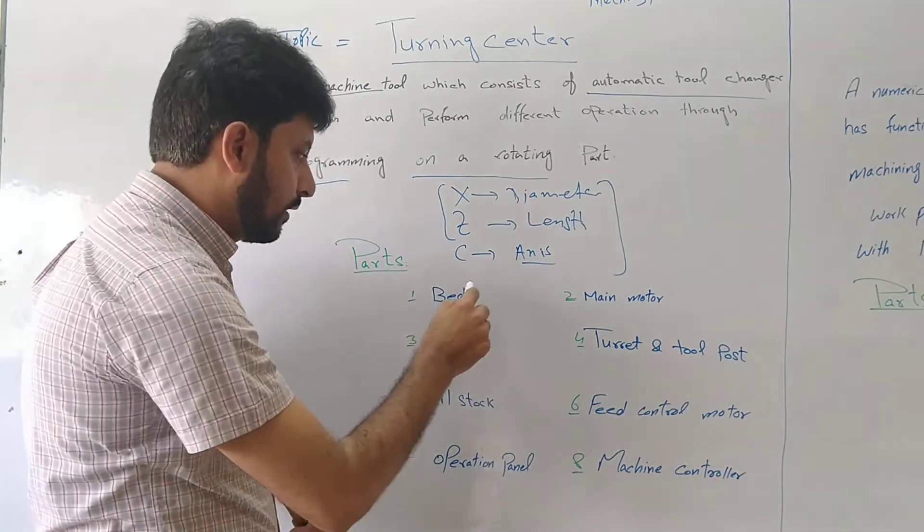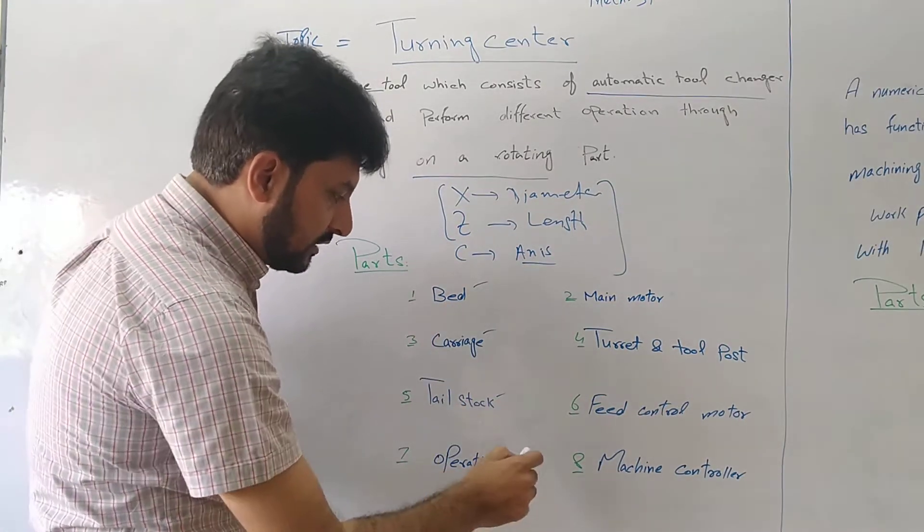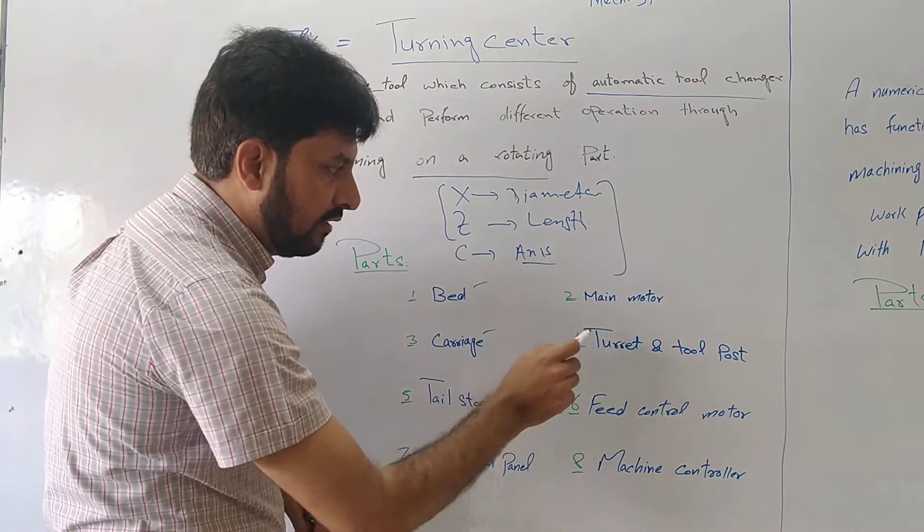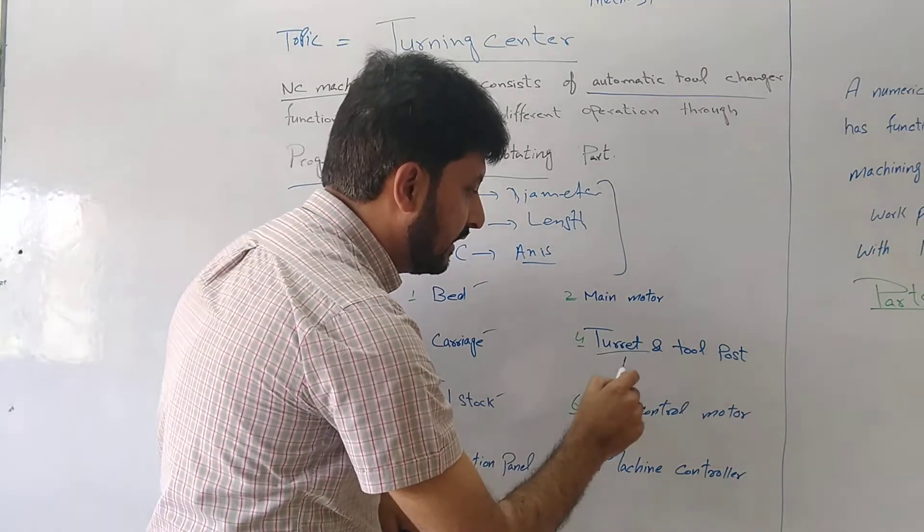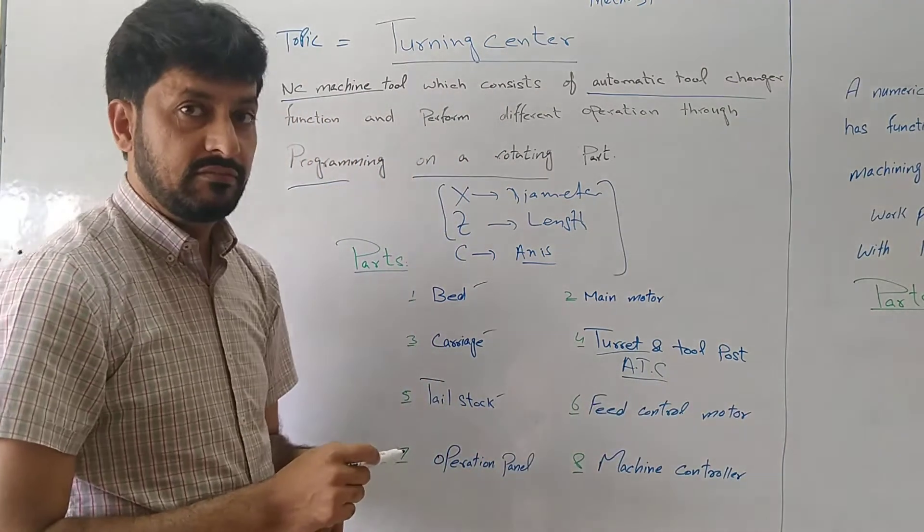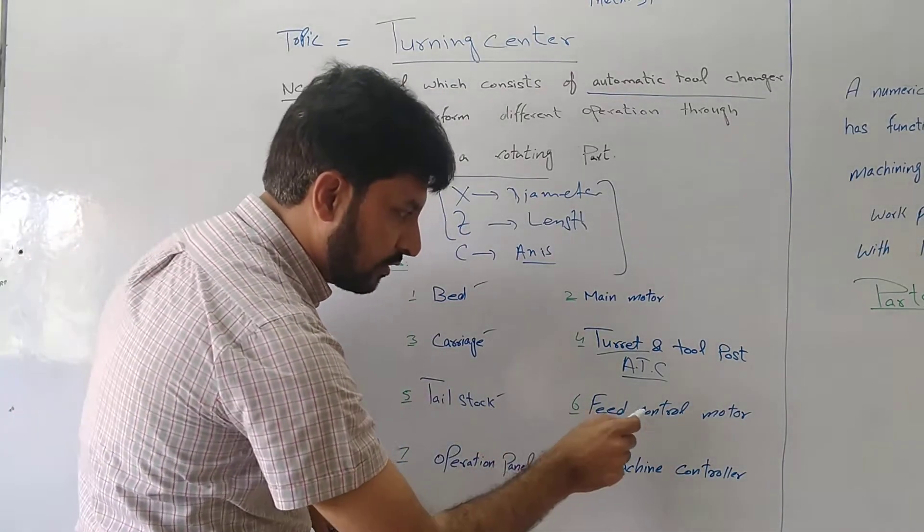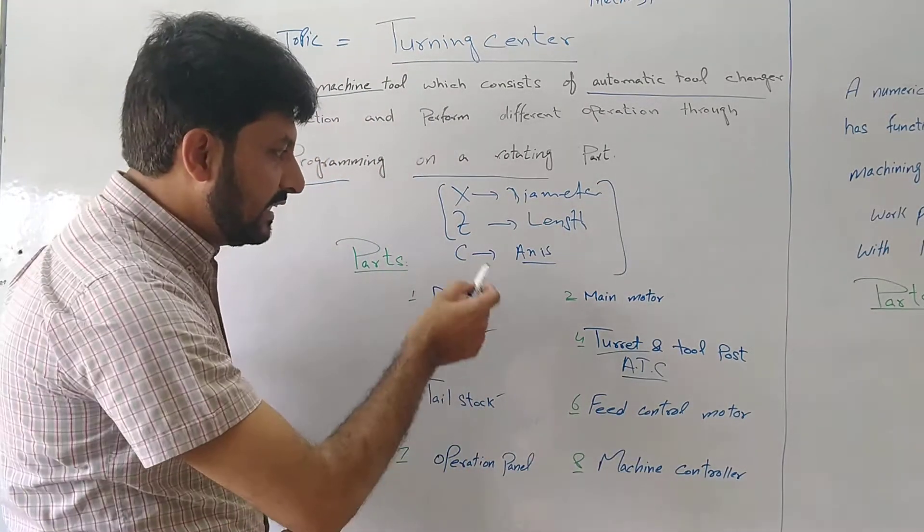What are the parts? Bed, carriage, tailstock, operation panel, main motor, turret and tool post. Turret is also used in ATC, automatic tool changer. This is a field control motor, machine controller. These are parts.